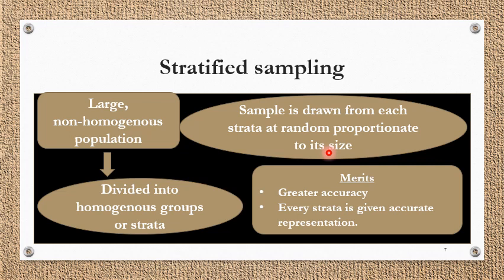Because there are many types of families — low income, high income, middle class — I will classify this population based on socioeconomic status. From each stratum, I will select samples randomly, proportionate to the size of that stratum. For example, if the low income group represents only 10% of the 100 families selected, I select 10% of the sample from that group — not equal thirds. This method has greater accuracy and every stratum is given accurate representation.